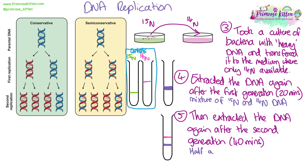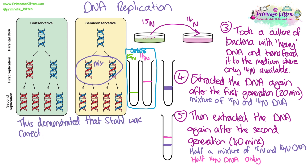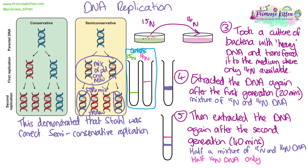Then in the second generation, after another replication had taken place, some bacteria had DNA that was entirely light — entirely made of nitrogen-14 nucleotides — and some still had that mixed DNA. These results clearly demonstrated that Stahl was right and it is semi-conservative replication. In the first generation, we'd expect a mix of old and new strands — the old heavy DNA paired with new light nucleotides. In the second generation, splitting the strands again gives one old heavy strand that acts as a template for new light nucleotides, and one already-light strand that also builds a new light strand, producing an entirely light molecule.